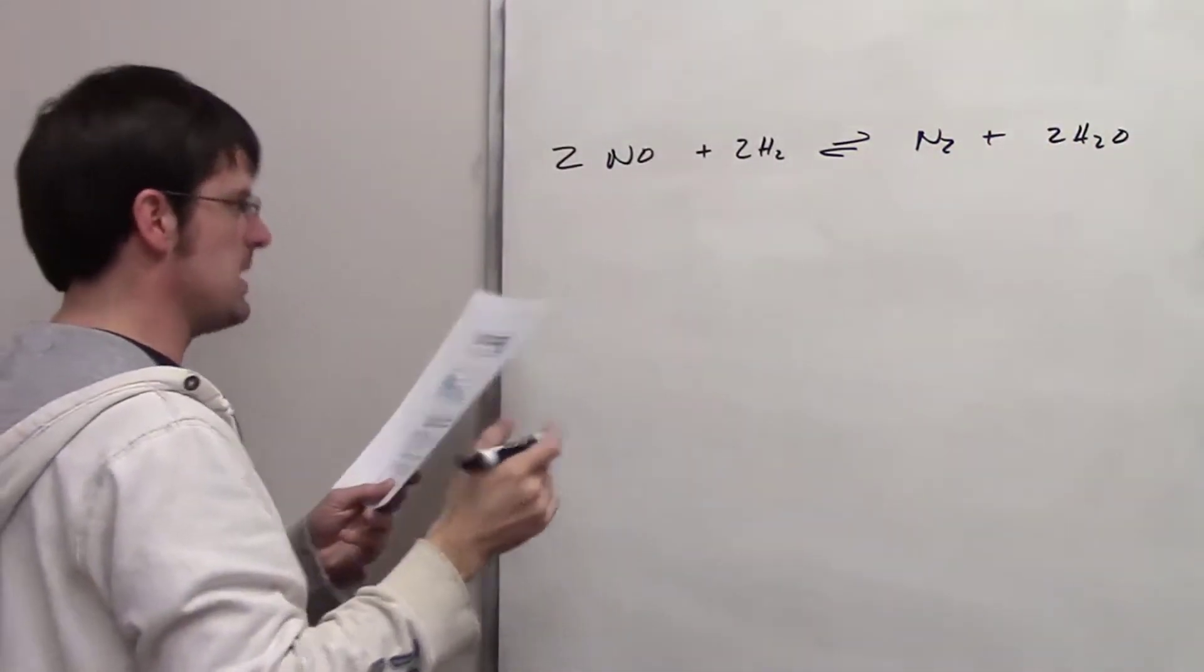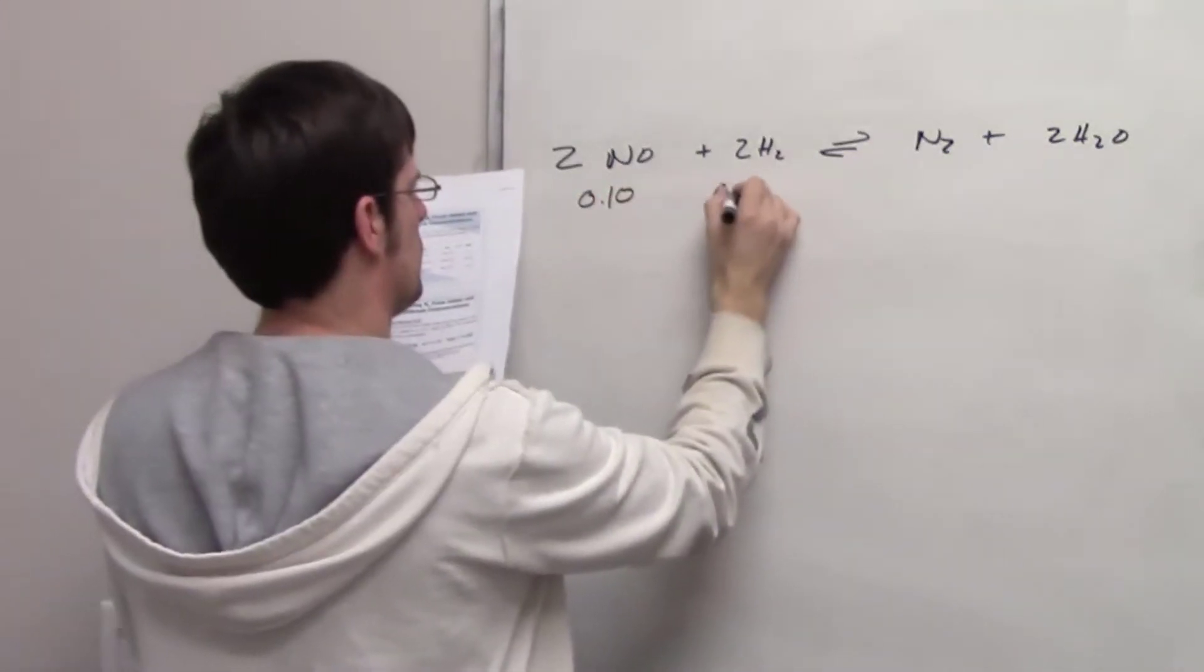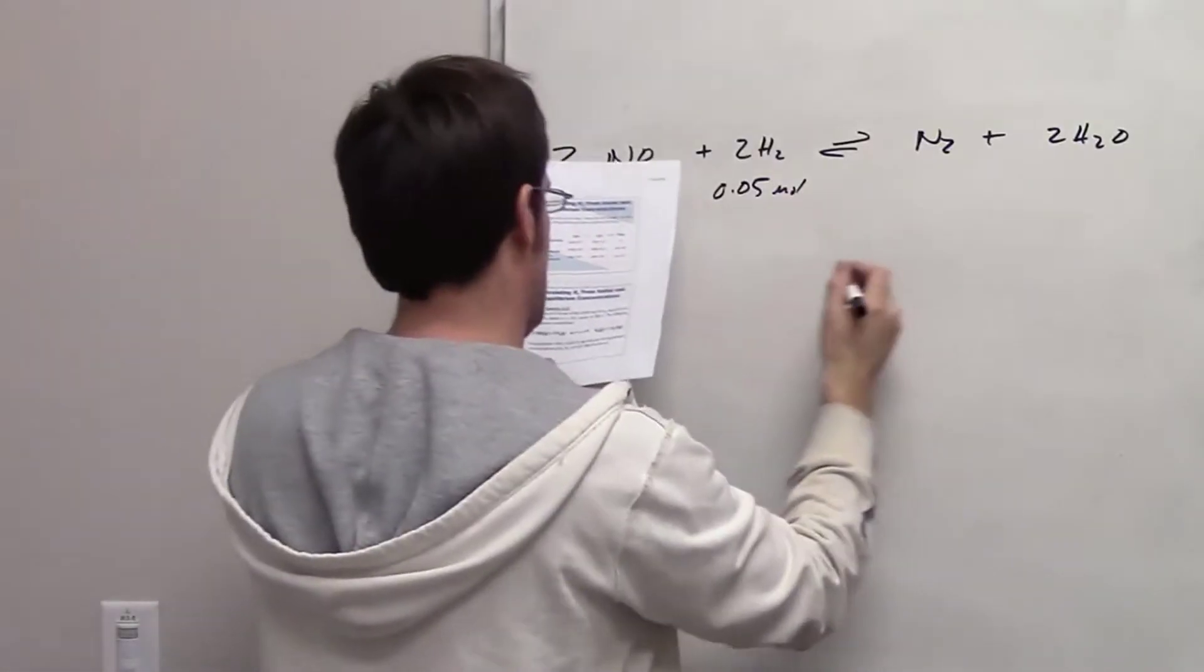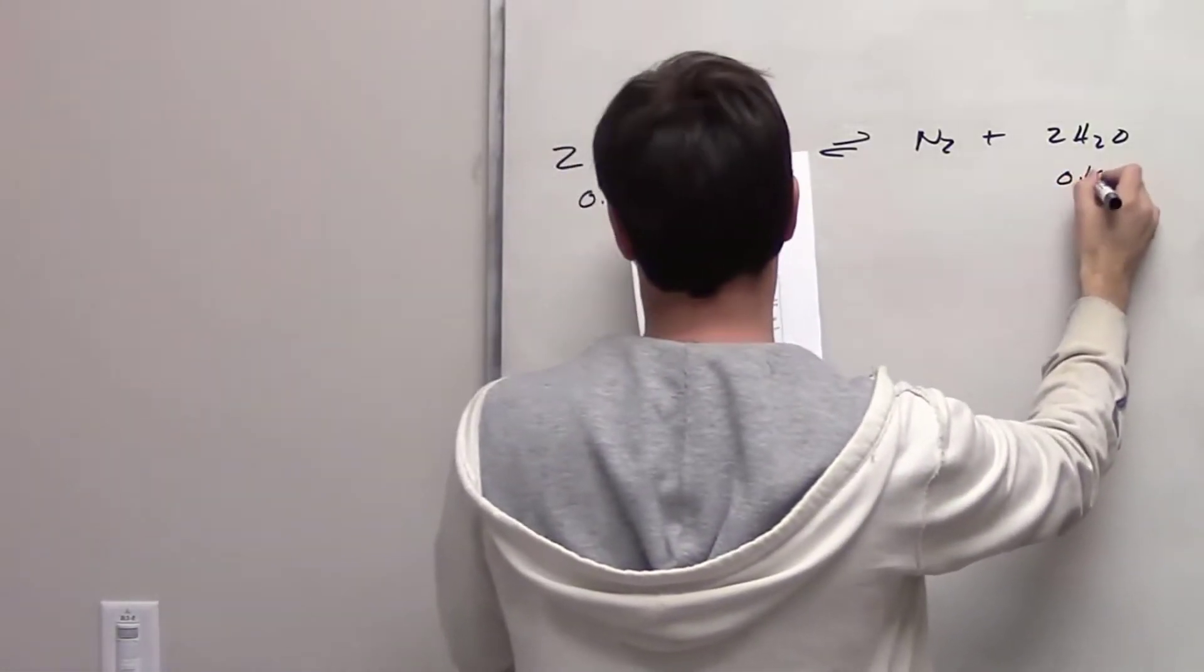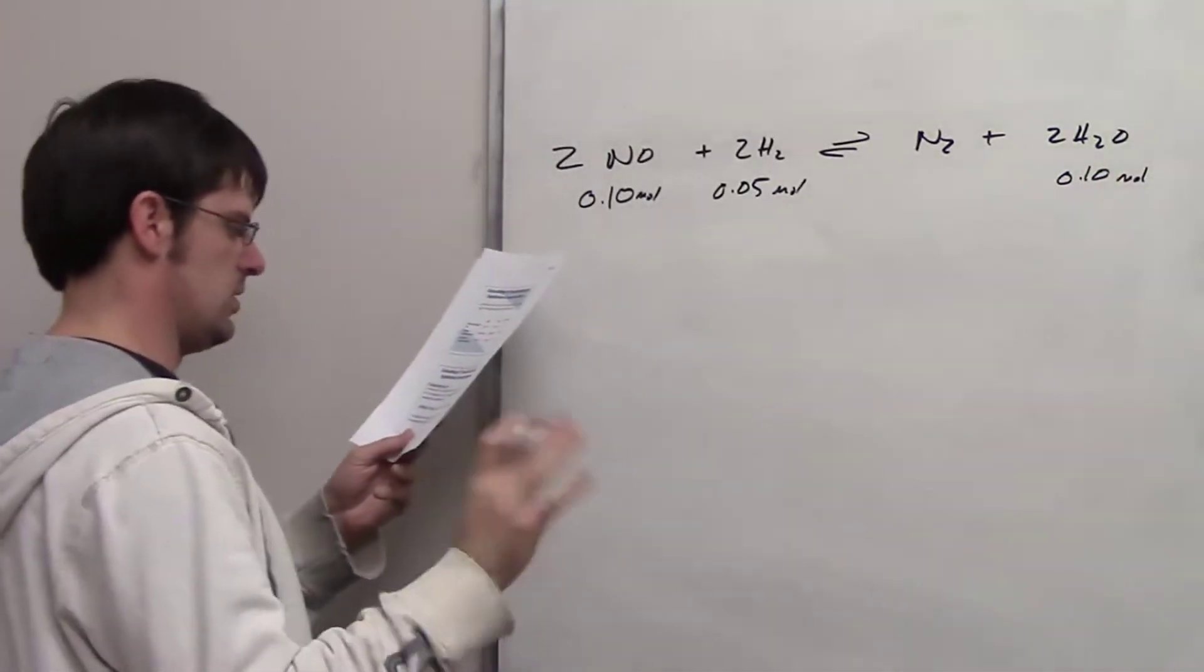It tells us that we've got a mixture of 0.1 moles of NO, 0.05 moles of H2, and 0.1 moles of water, and we've thrown it in a one liter vessel at a certain temperature.